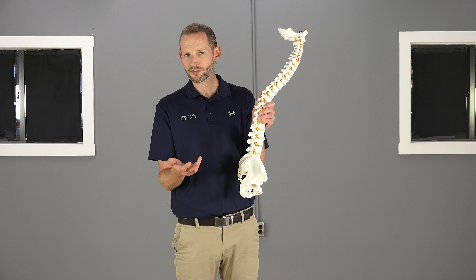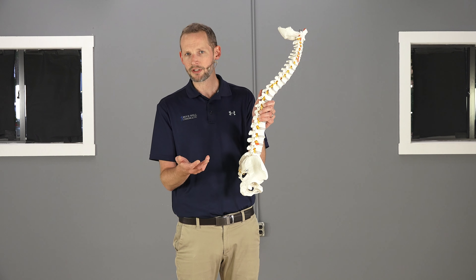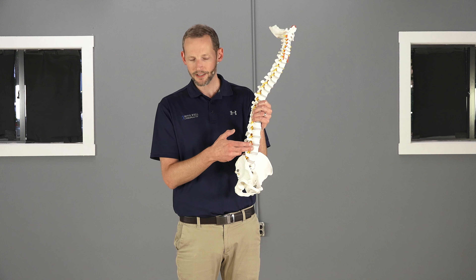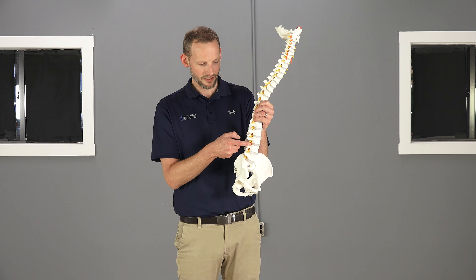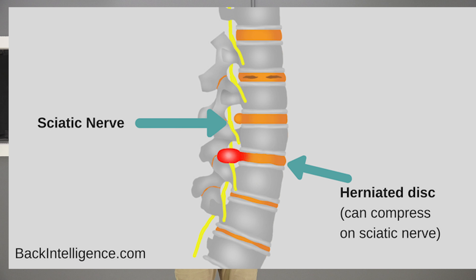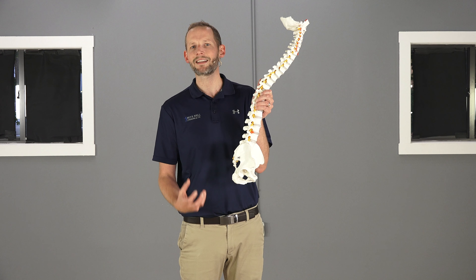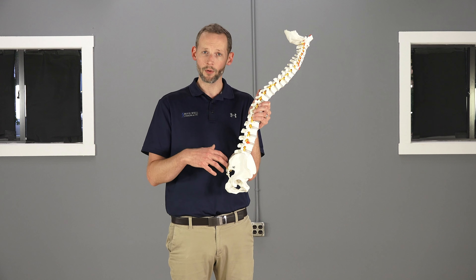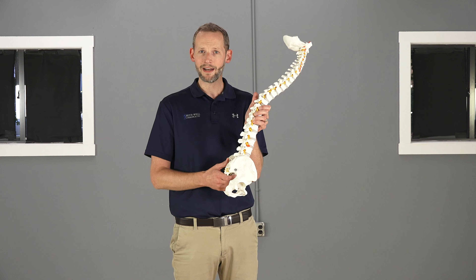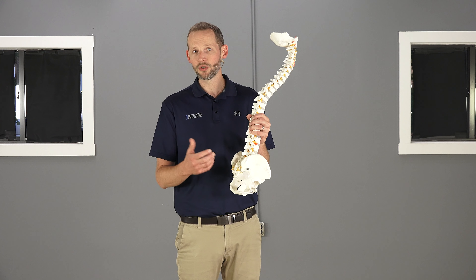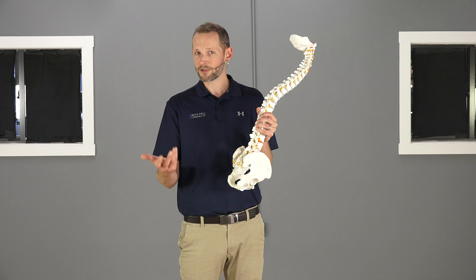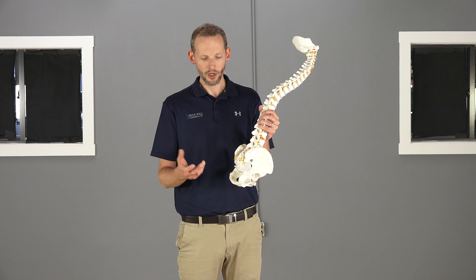The most common cause of true sciatica is a herniation of a disc. If you have a herniation of a disc, you can see an impingement upon the nerve root, which can affect the sciatic nerve and cause sciatic symptoms. Piriformis syndrome, on the other hand, also causes sciatic-type symptoms — and this is where it gets confusing.